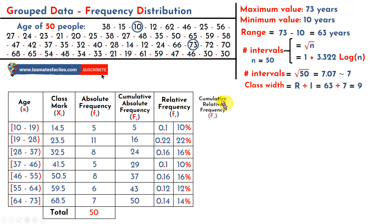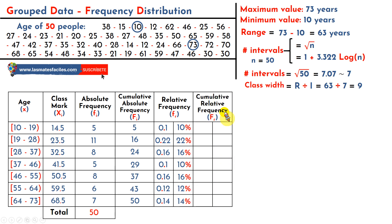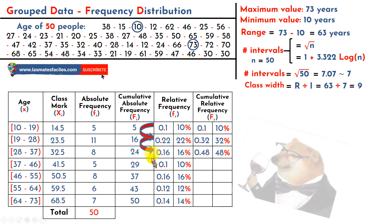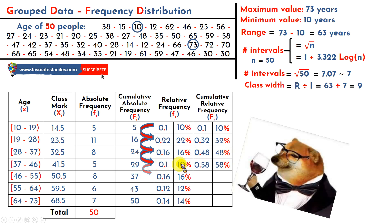Let's go to the next column: cumulative relative frequency. It's very easy — it's just adding. We start with the first relative frequency and keep adding the next one. With this, we can say that we have finished building our frequency distribution table.